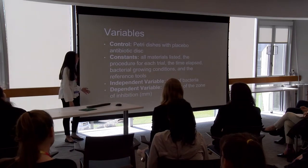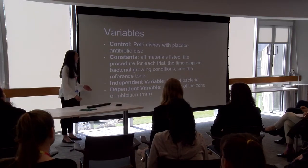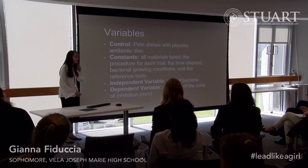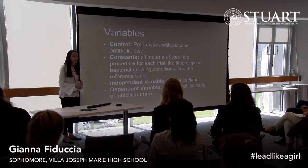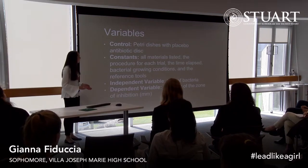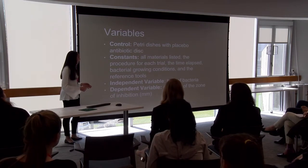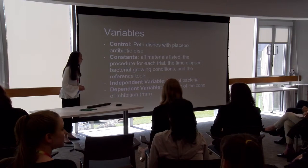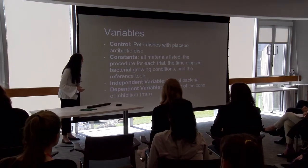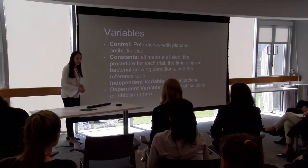For my variables: my control was a petri dish with a placebo antibiotic disc, to show that if there was no antibiotic on the bacteria, no zone of inhibition would be visible. My constants were all the materials listed, the procedure for each trial, the time elapsed, the bacterial growing conditions, and the reference tools. My independent variable was the type of bacteria, and the dependent variable is the diameter of the zone of inhibition in millimeters.